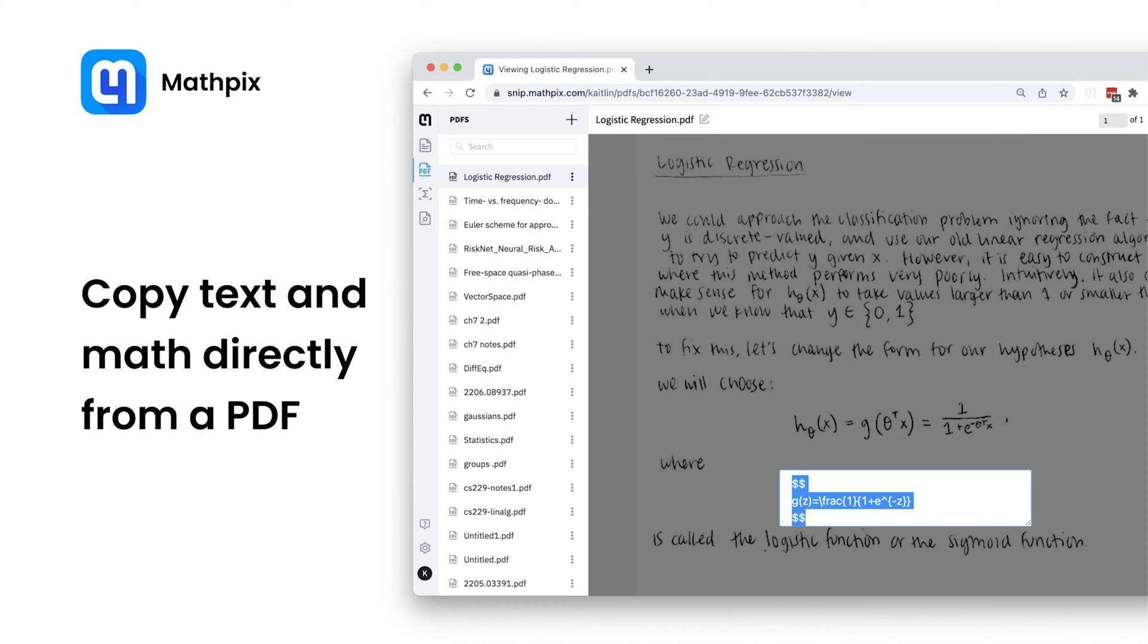We recently added a new feature where you can copy text and also math directly from an original PDF that you've uploaded into SNP.